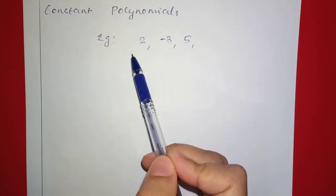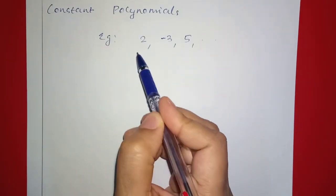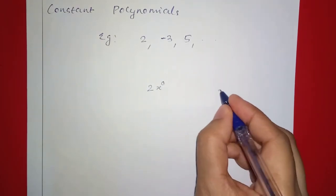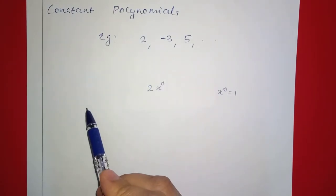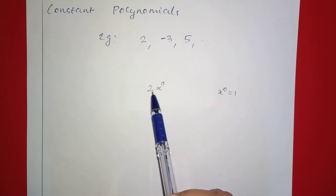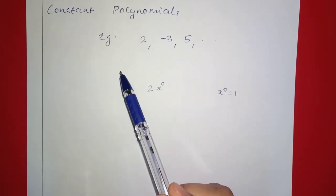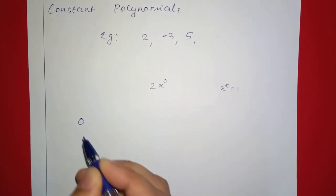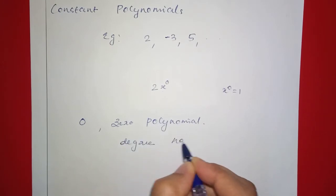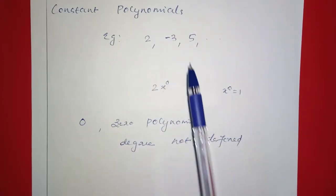What are constant polynomials? Examples are 2, negative 3, 5, etc. We can write 2 as 2 times x raised to 0, since x raised to 0 equals 1. The highest power of the variable is zero for all non-zero constants. If the polynomial is zero, we call it the zero polynomial, and its degree is not defined.